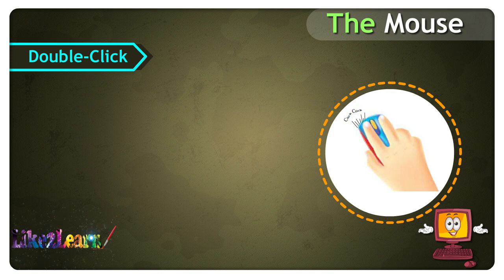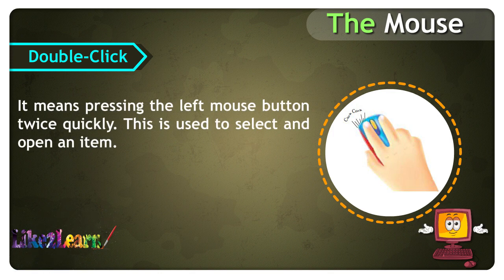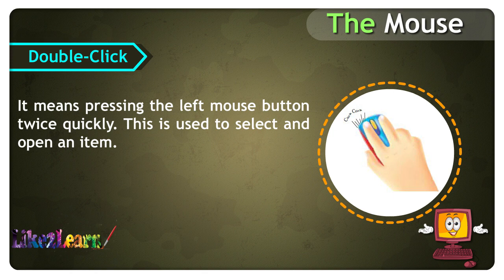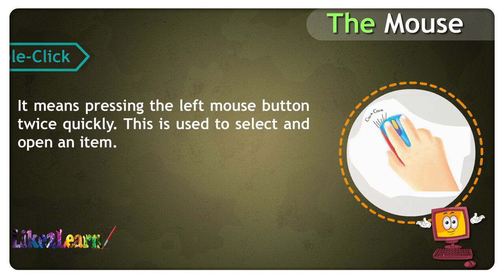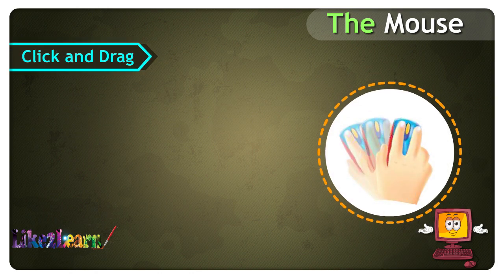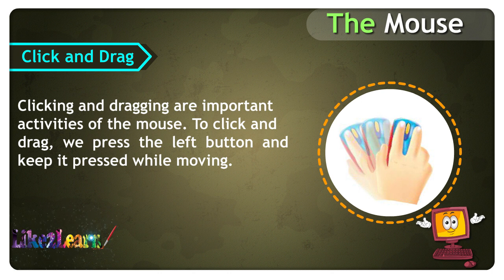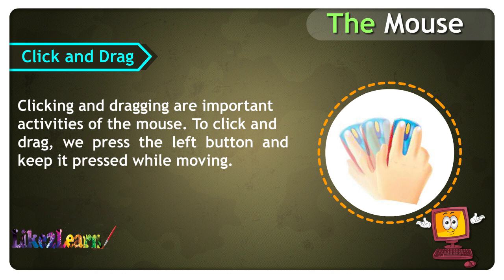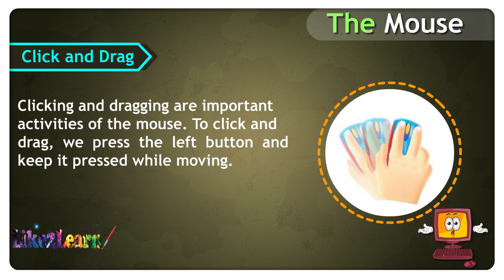Double click means pressing the left mouse button twice quickly. This is used to select and open an item. Click and drag are also important activities of the mouse. To click and drag, we press the left button and keep it pressed while moving.